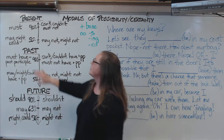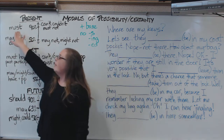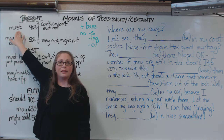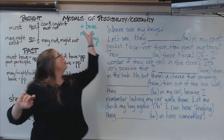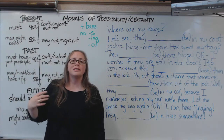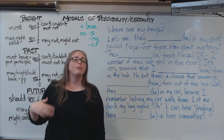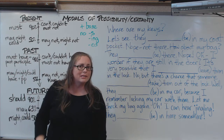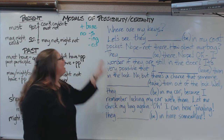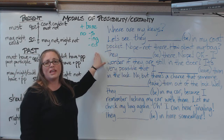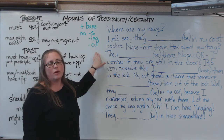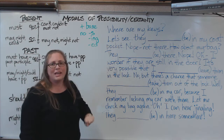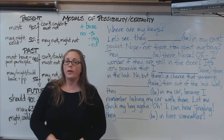So for example, the modal 'must' will be followed by a base verb: must have, must be, must do, must eat. And it never takes one of these endings — you never have 'musts' or 'musting.'